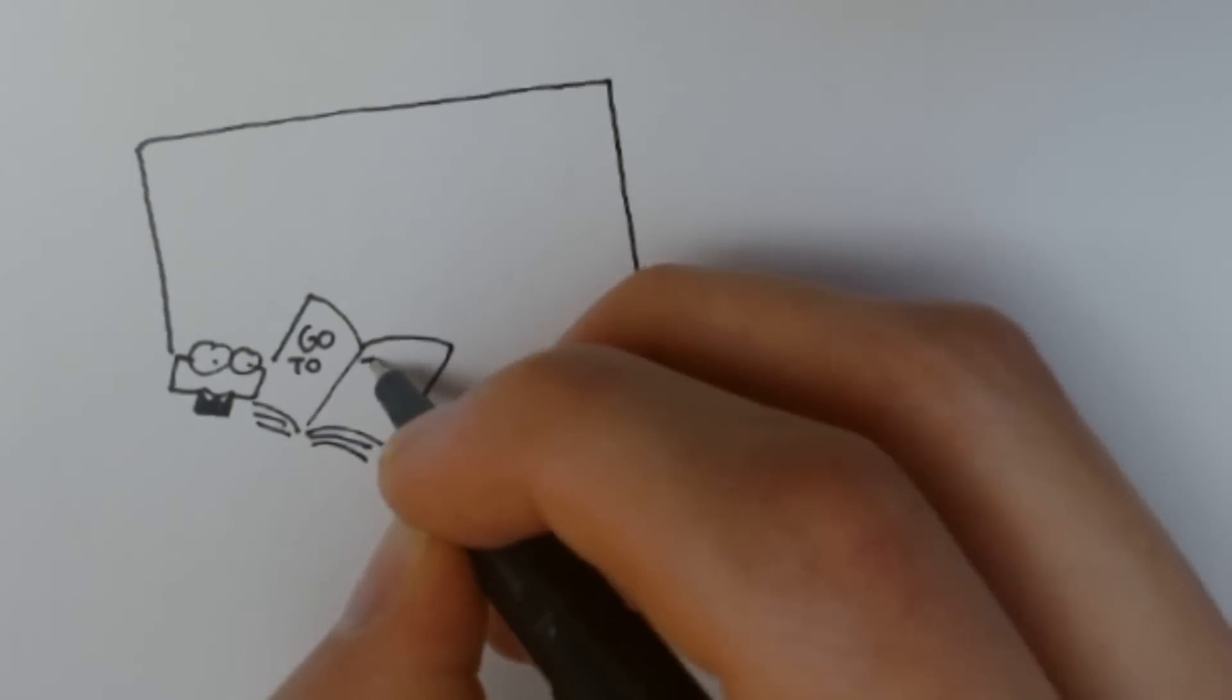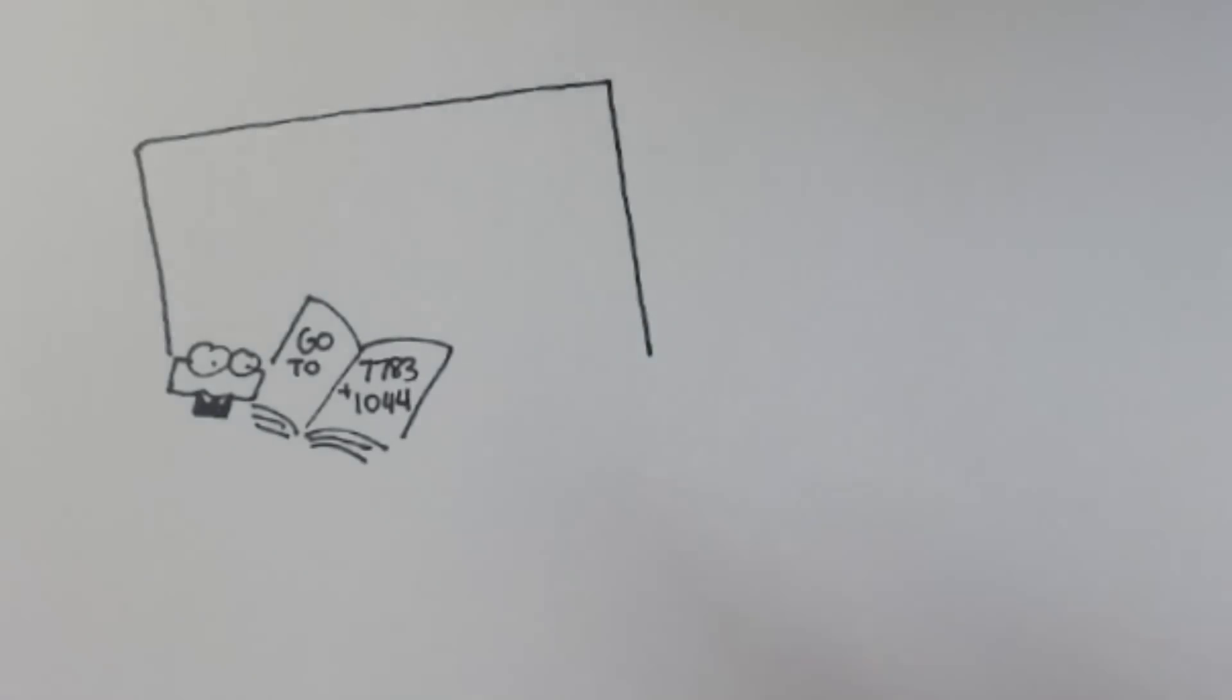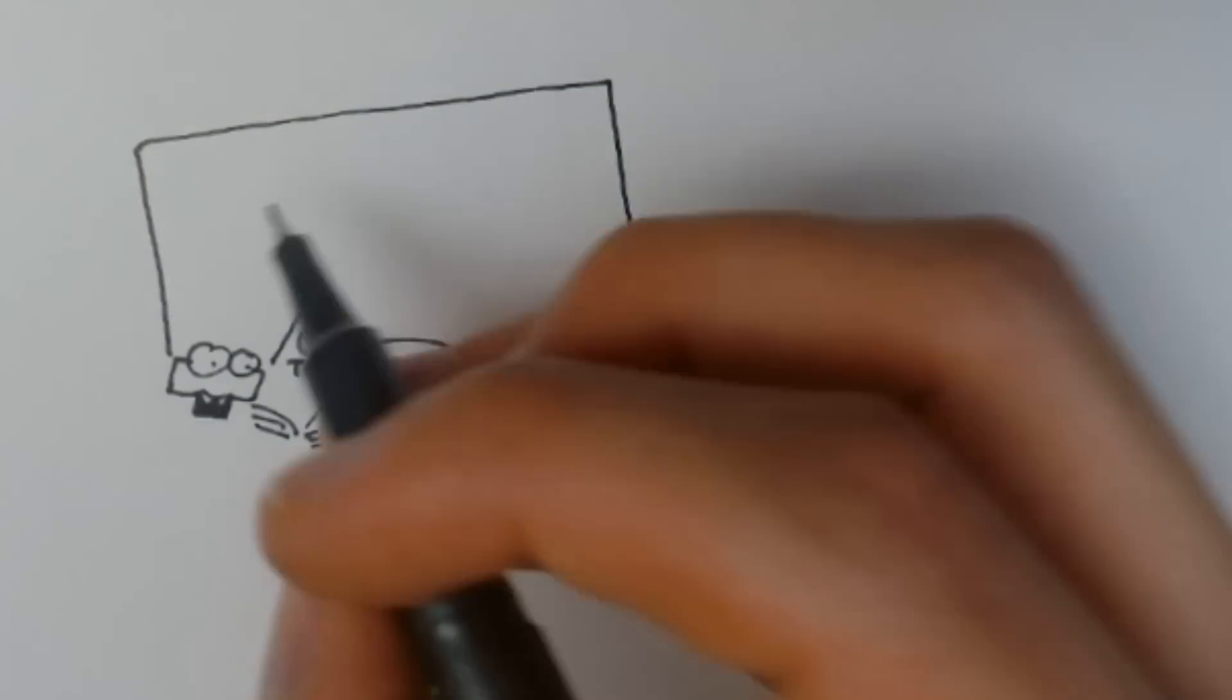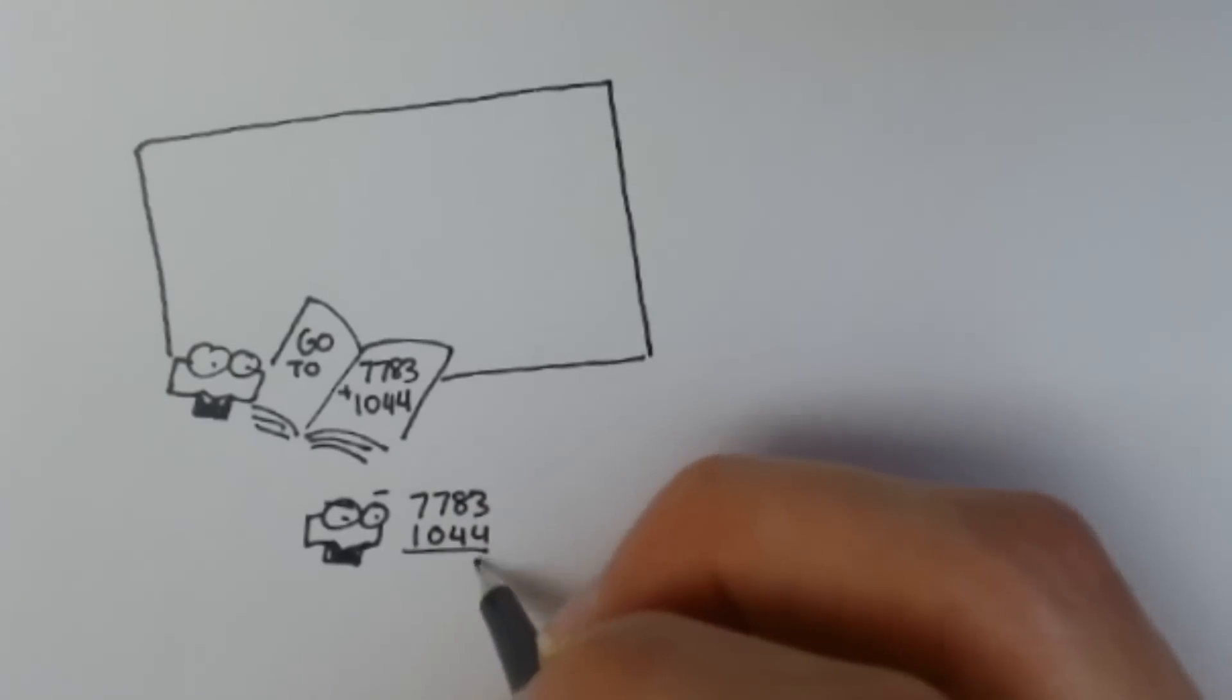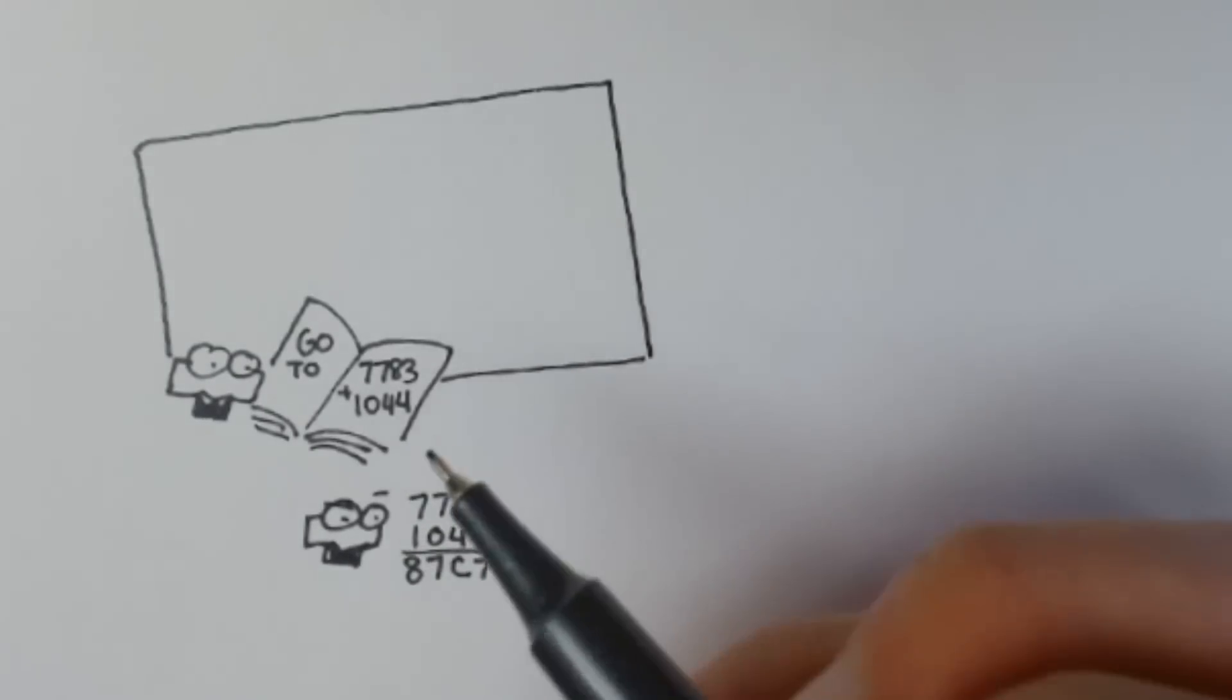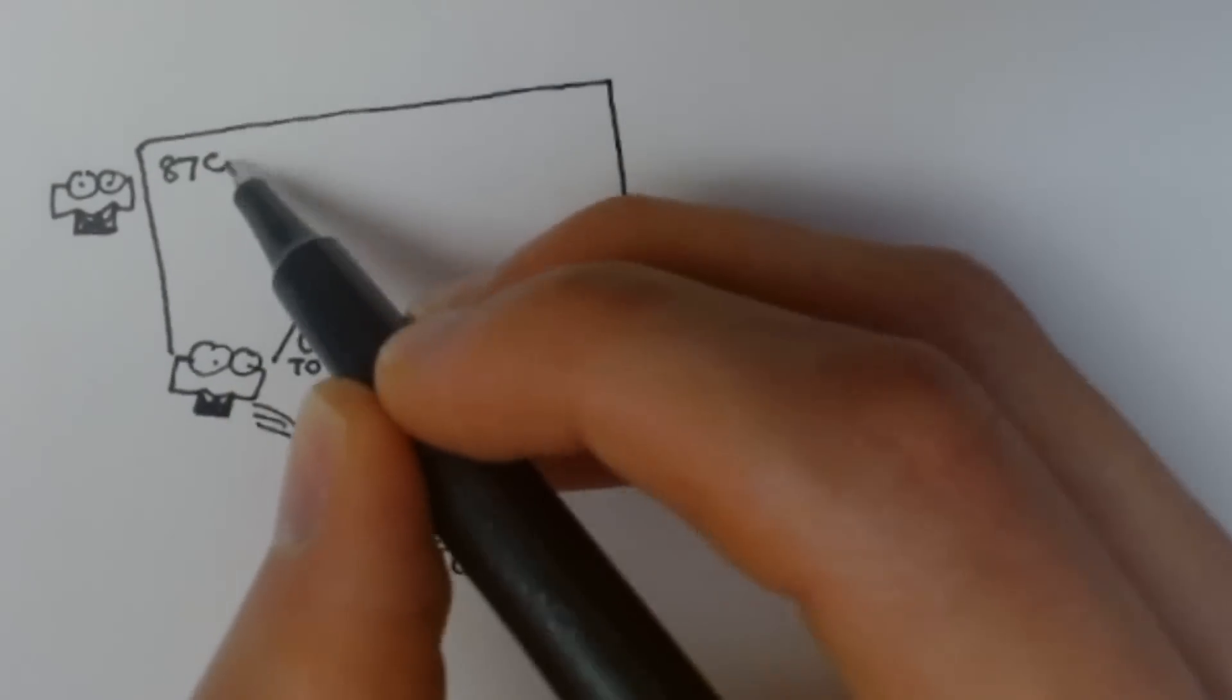This is achieved by having the processor look at the current game state it has written on the board, and referencing that with a lookup table to figure out which page in the book it needs to turn to and read instructions from. Because it can't hold much in its head, it ends up writing down the book page on the board as it works it out.